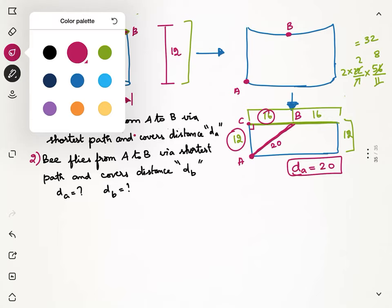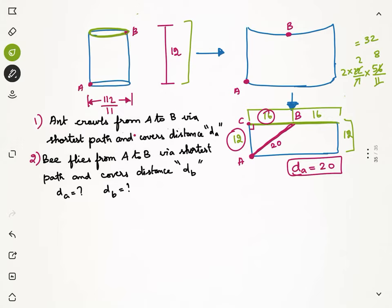Now, similarly, let us look at what is the distance that the bee would have covered. Let us call this point as D and let us draw a diameter on the base circle of the cylinder. If I connect A to B and B to D, I have a right angle triangle. In this right angle triangle, my AD is my diameter which is 112 by 11. My DB is nothing but height of the cylinder which is 12. AB is the distance travelled by the bee. If it has to take the shortest path, this AB is the distance that we are looking to find.